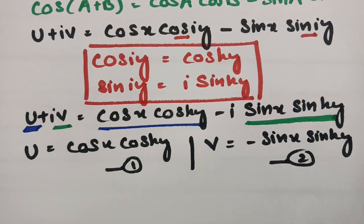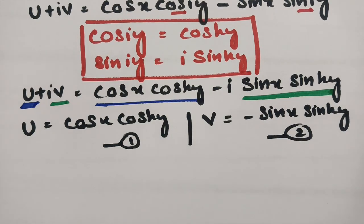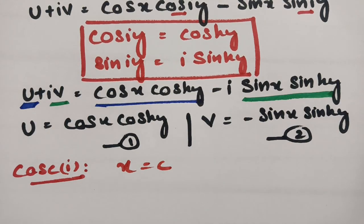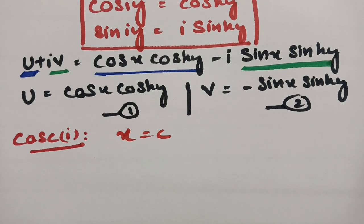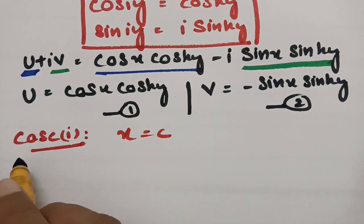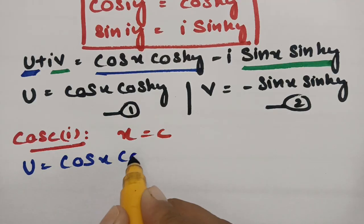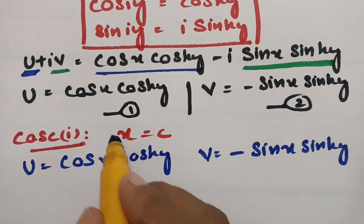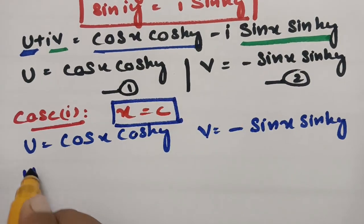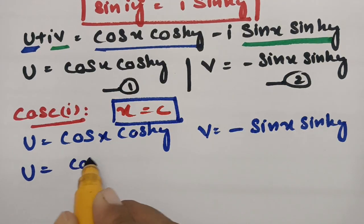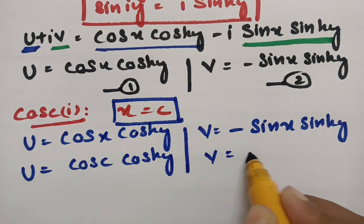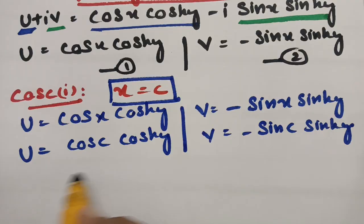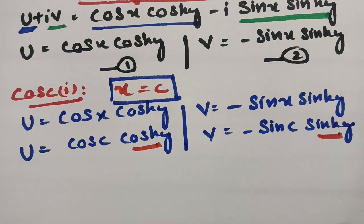Case 1: take X as a constant, X equals C. Substituting into both equations: U equals cos C cosh Y, and V equals minus sin C sinh Y. From these, we extract cosh Y equals U / cos C, and sinh Y equals minus V / sin C. Now to eliminate Y, we square both expressions.